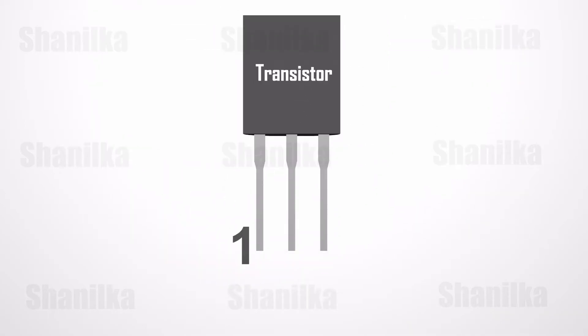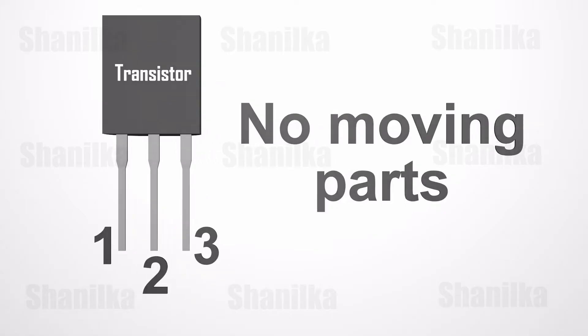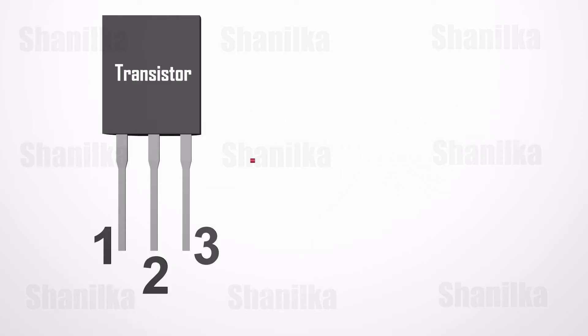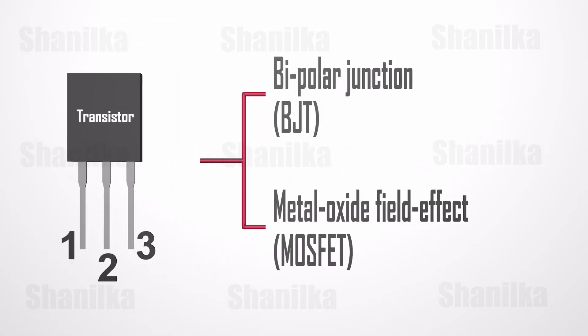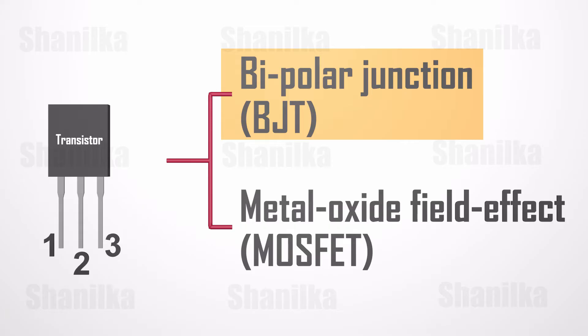The transistor is a three-terminal solid-state device that can do two different jobs. It can work either as an amplifier or a switch. There are two basic types of transistors: bipolar junction, or BJT, and metal oxide field effect, or MOSFET. In this tutorial, we'll focus on the BJT because it's slightly easier to understand.